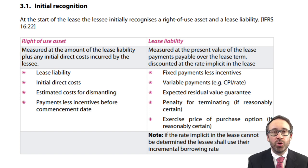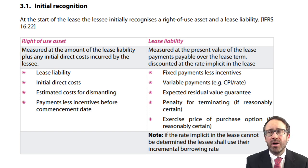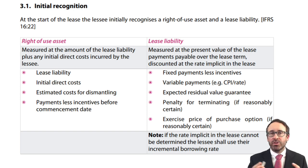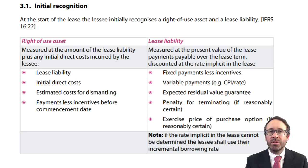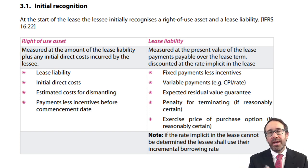Having gone through the accounting treatment in the previous video in relation to the lease of short life and low value assets — which had a relatively straightforward accounting treatment — we now move on to look at how we treat the rest of our leases. These are treated by recognising an asset on the statement of financial position alongside a corresponding liability, to reduce the impact of off-balance-sheet finance.